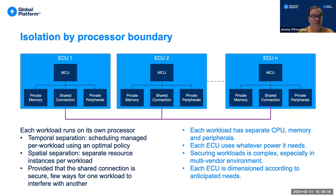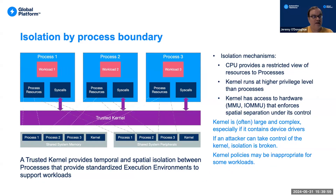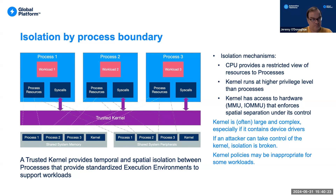Following the history of general purpose computing, I'm first going to talk about isolation by process boundary. This is the type of isolation you're likely to see on a Linux or Windows system. Essentially, you have a kernel running in some sort of privileged mode, providing temporal and spatial isolation between a set of processes. Each process has a view of resources and can make system calls to manage peripherals, memory, or to communicate with other processes. We put the workloads inside these processes — so now we have three workloads running on one processor.